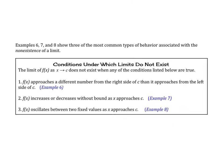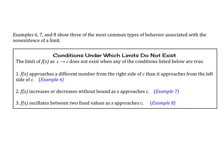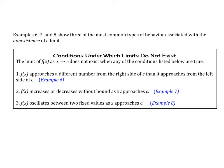So let's just look at this box here. Examples 6, 7, and 8 show three of the most common types of behavior associated with the non-existence of a limit. So conditions under which limits do not exist. The limit of f of x as x approaches c does not exist when any of the conditions listed below are true. f of x approaches a different number from the right side of c than it approaches from the left side of c. So we saw that in the example with our piecewise function, where it was 1 on one side and negative 1 on the other side. They do not approach the same number.